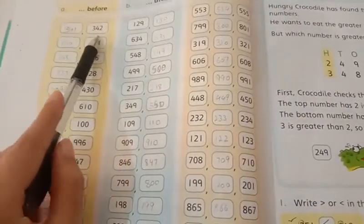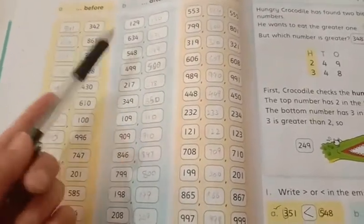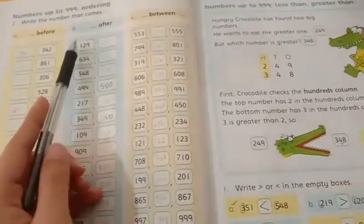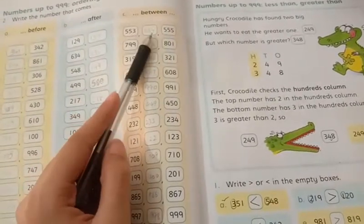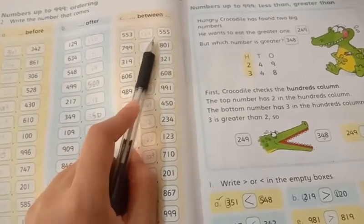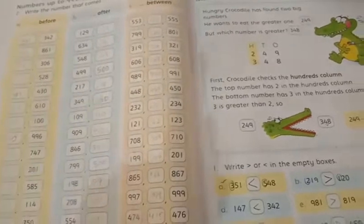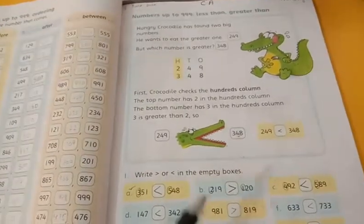Before you give a number from before, then you give it to 1 number. First from 341, first from 861, fourth from 860. After from 129, first from 130. Between, second from 553, between 555 these numbers are 554.